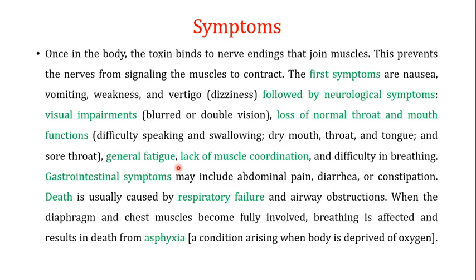The neurotoxin can also cause gastrointestinal symptoms, which may include abdominal pain, diarrhea, or constipation. Death occurs when respiratory failure and airway obstruction happen — when the muscles of the respiratory system are affected, that leads to the death of the individual.